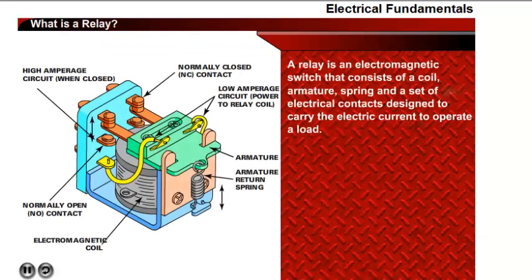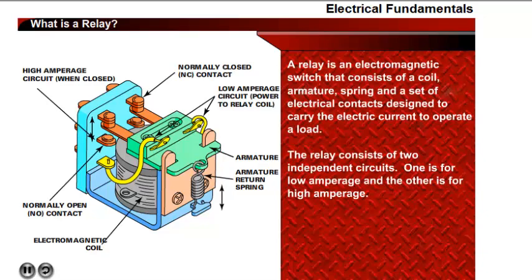A relay is an electromagnetic switch that consists of a coil, armature, spring, and a set of electrical contacts, which are designed to carry the heavy electric current required to operate a load, such as a motor or pump. The relay consists of two separate independent circuits — one circuit is low amperage and the other circuit is high amperage.